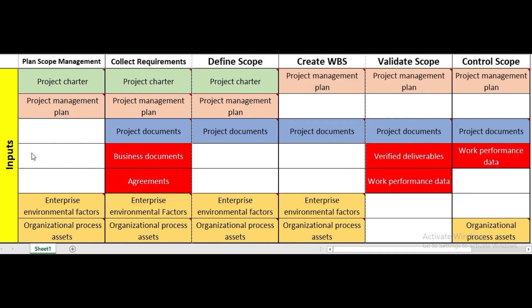Welcome friends. Today we will learn about project scope management knowledge area from the PMBOK 6 guide, which is the book for the PMP by the Project Management Institute. As you can see in this top row, we have different project management processes related to scope management: plan scope management, collect requirements, define scope, create WBS, validate scope, and control scope.